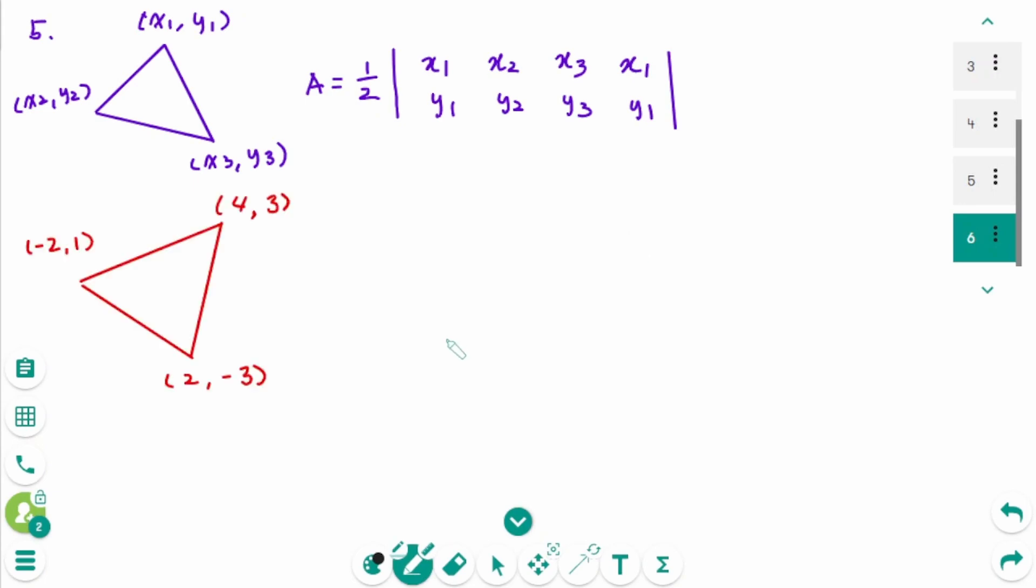The first thing to do is write the ordered pairs vertically. The order doesn't matter. Area equals 1 over 2 times, minus 2 comma 1, and 4 comma 3, 2 comma minus 3, the first one, minus 2 comma 1 again. The important thing is that the first ordered pair must be written one more time at the end.